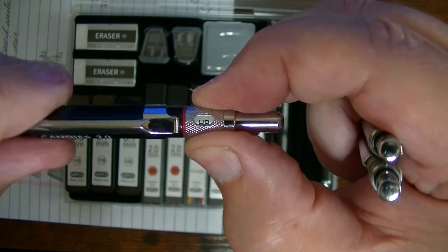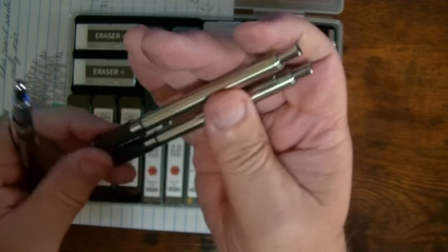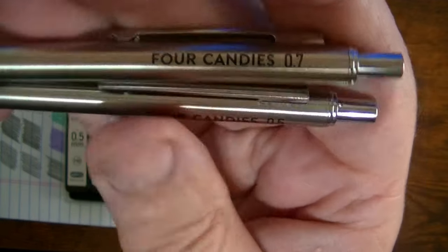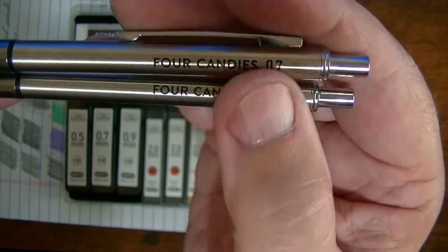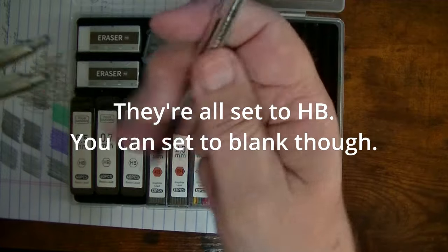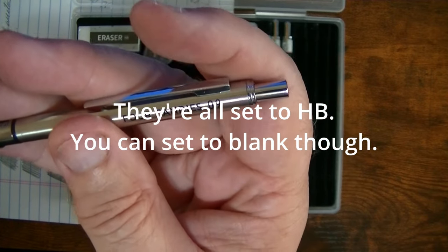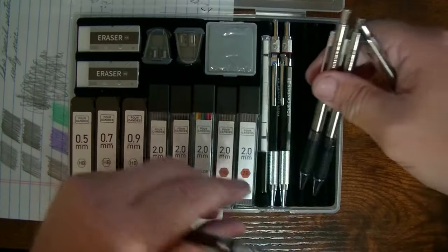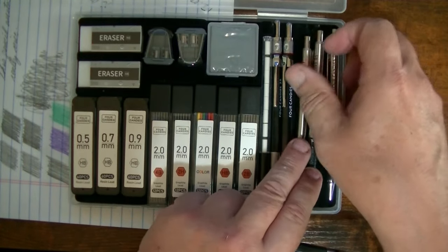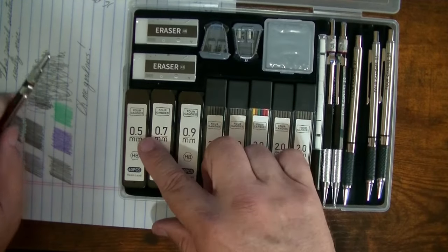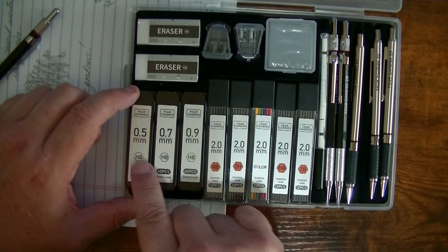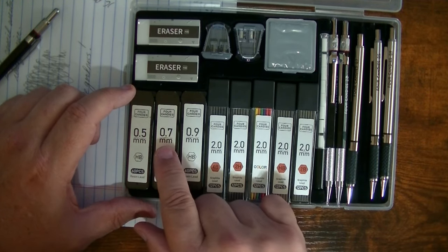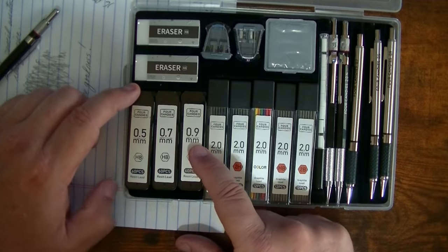So you don't have that turning thing like you do on the 2.0s so that you can set the different leads that you have in there. You just have the size of the lead. You have the 0.5, the 0.7, and you have the 0.9.